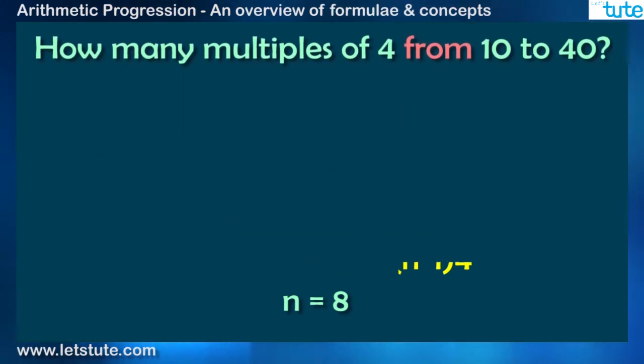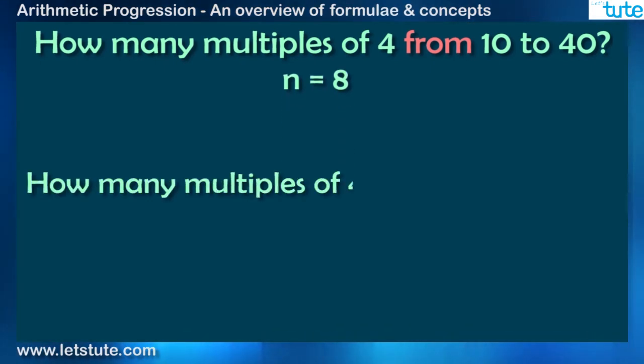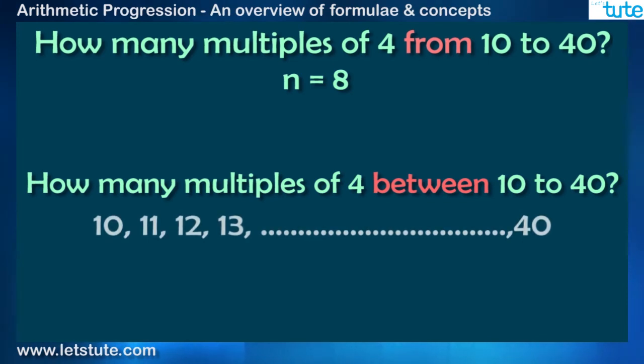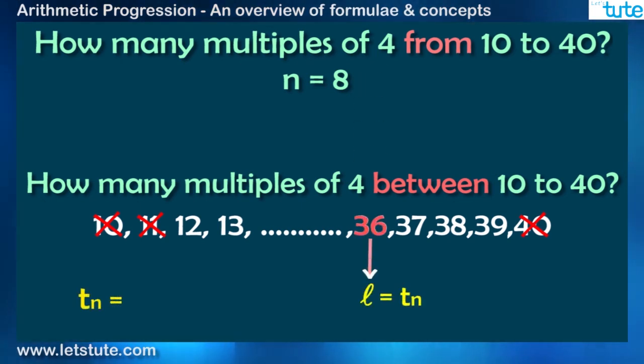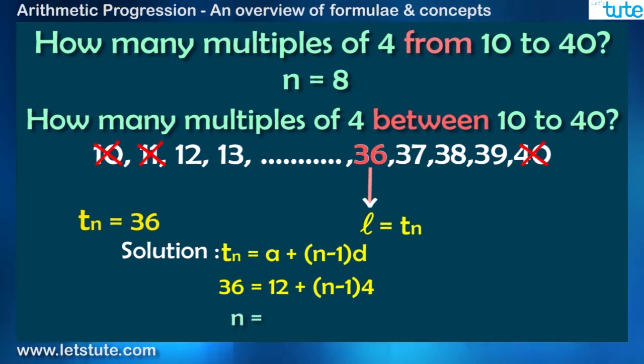For the same example, by using between. So how many multiples of 4 between 10 to 40? Since 10 will automatically be excluded as it is not the multiple of 4 but we will also exclude 40. So the last multiple or say Tn equals 36, right? And therefore 36 equals 12 plus n minus 1 into 4. And this time we get n as 7.